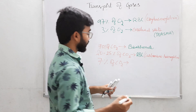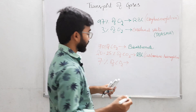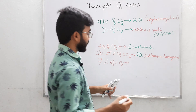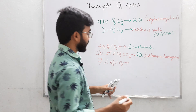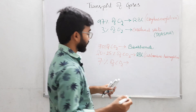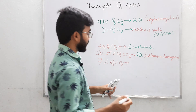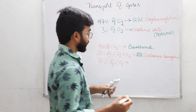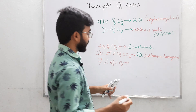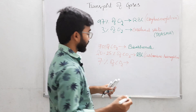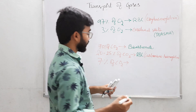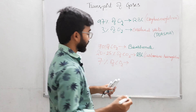In the form of carbaminohemoglobin. So 70% of the carbon dioxide is transported from the tissues to the lung in the form of bicarbonates, and 20 to 25% of the carbon dioxide through RBC in the form of carbaminohemoglobin. About 7% of the carbon dioxide is transported from the tissues to the lung in the form of dissolved state in the plasma.